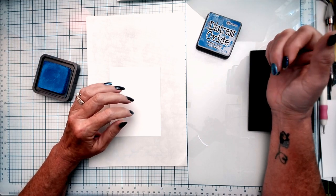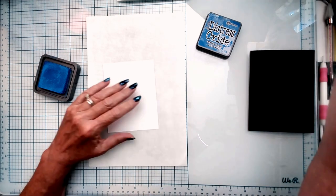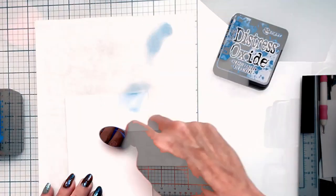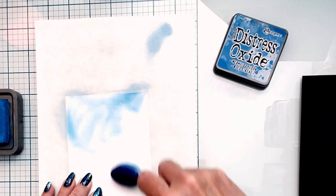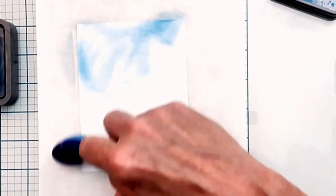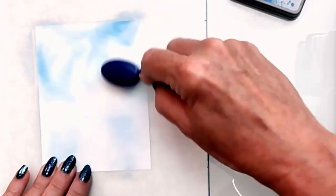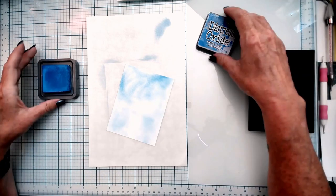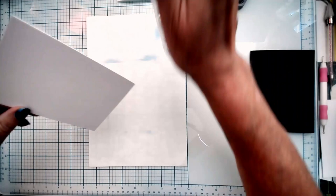I already pre-cut it to 4⅛ by 5¼ inches. For our ink blend today, we are going to start with Ranger Distress Oxide Ink in Mermaid Lagoon. This is going to create our sky on our cloud. Colleen will be using a cloud embossing folder from Spellbinders.